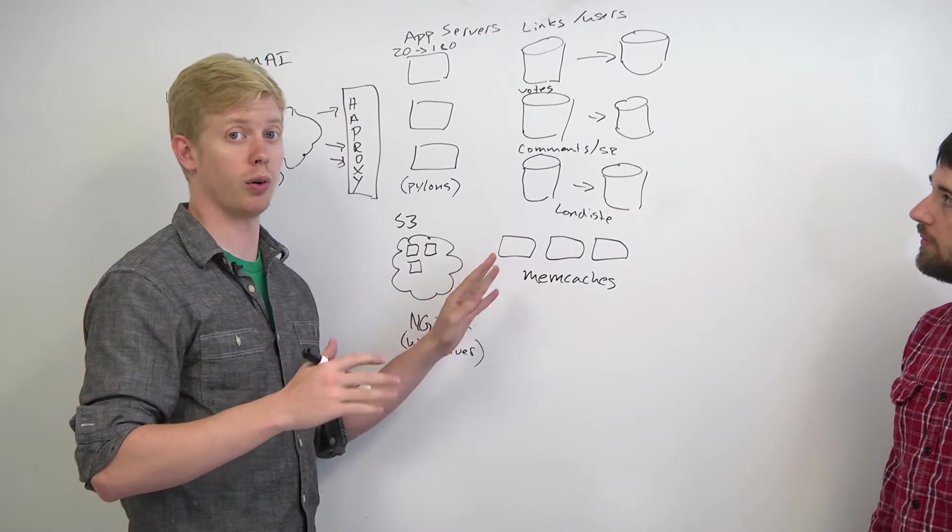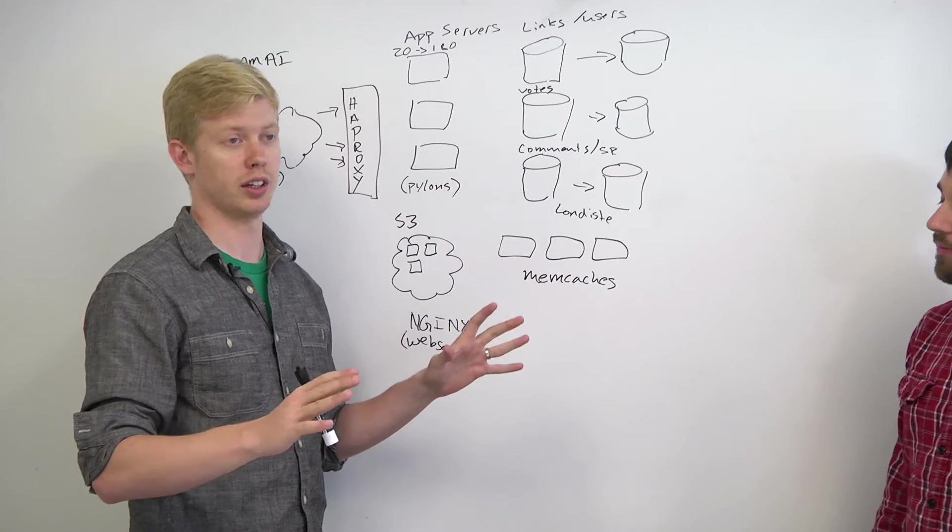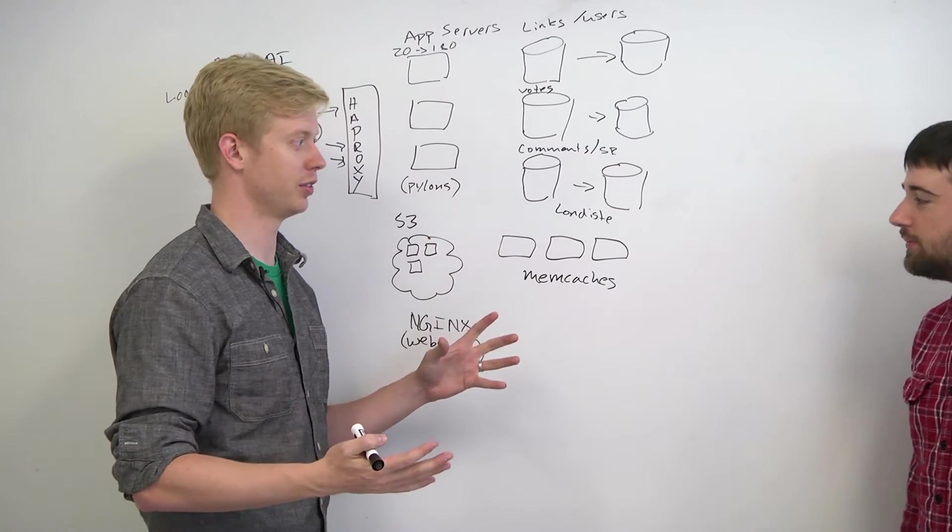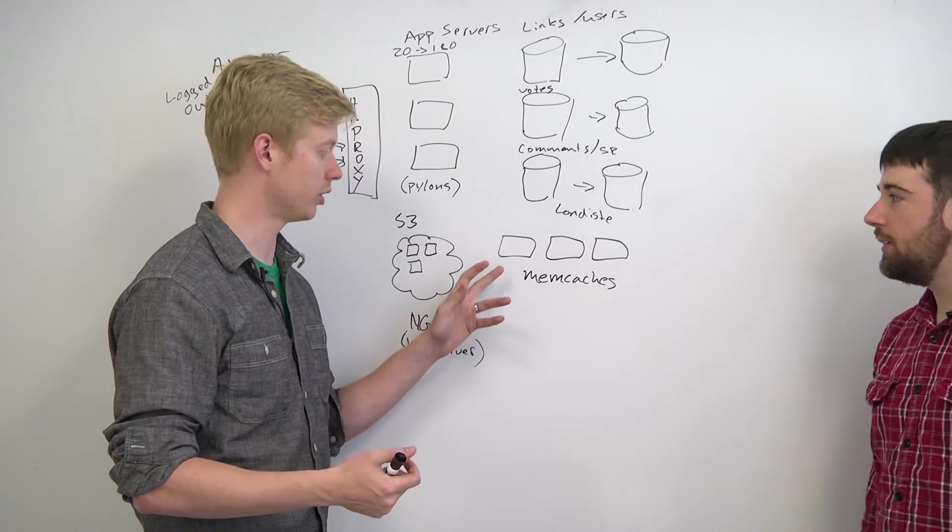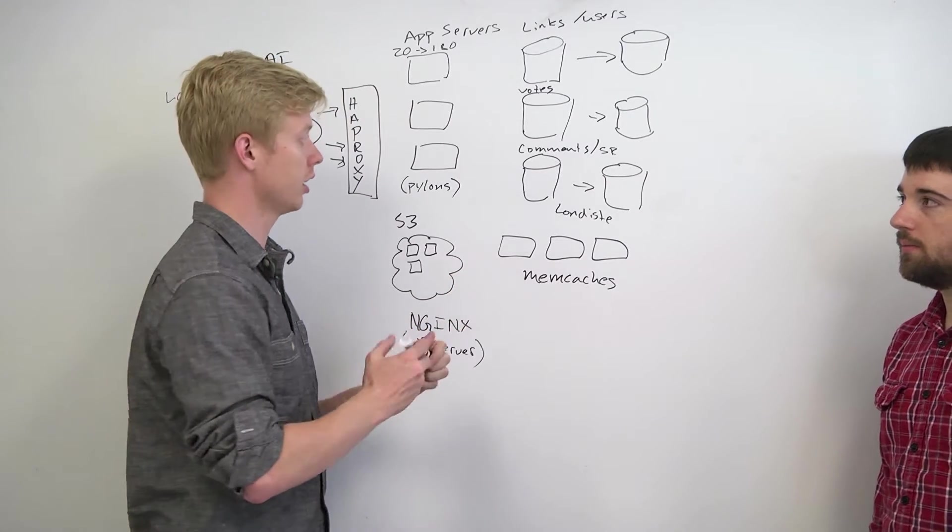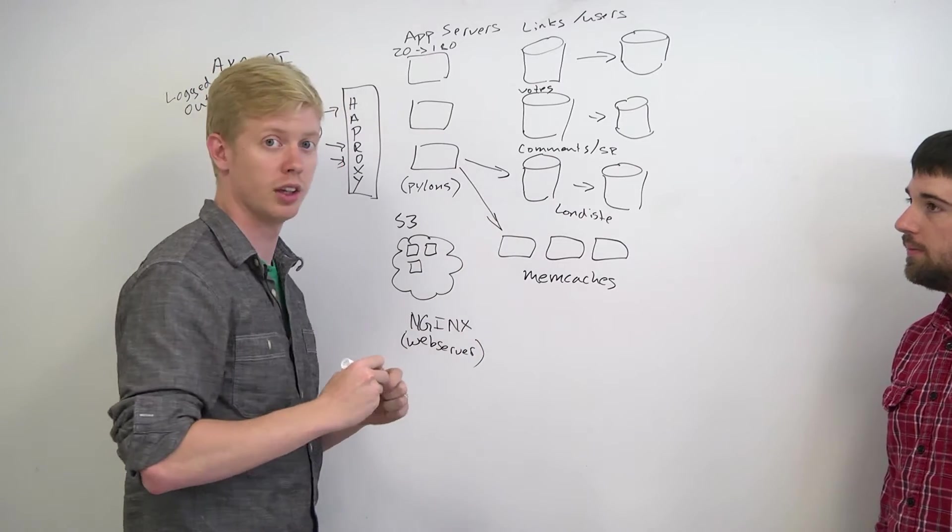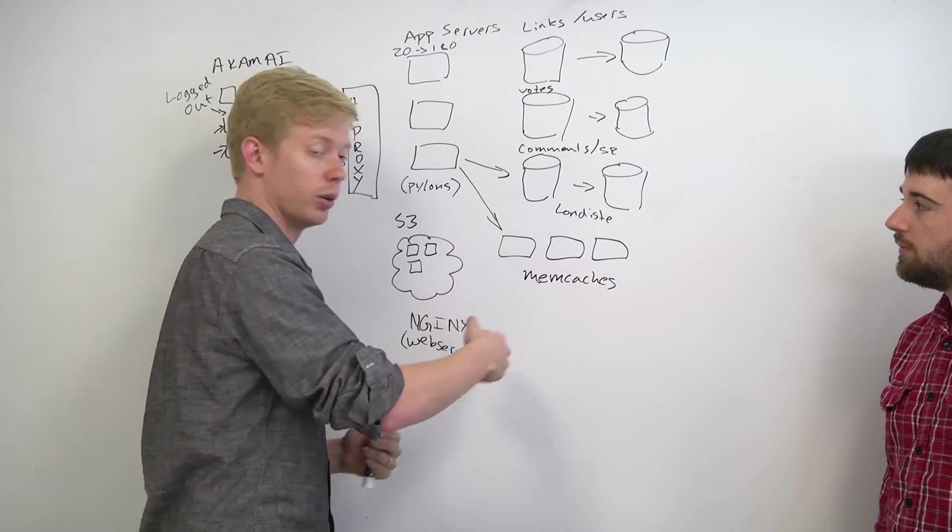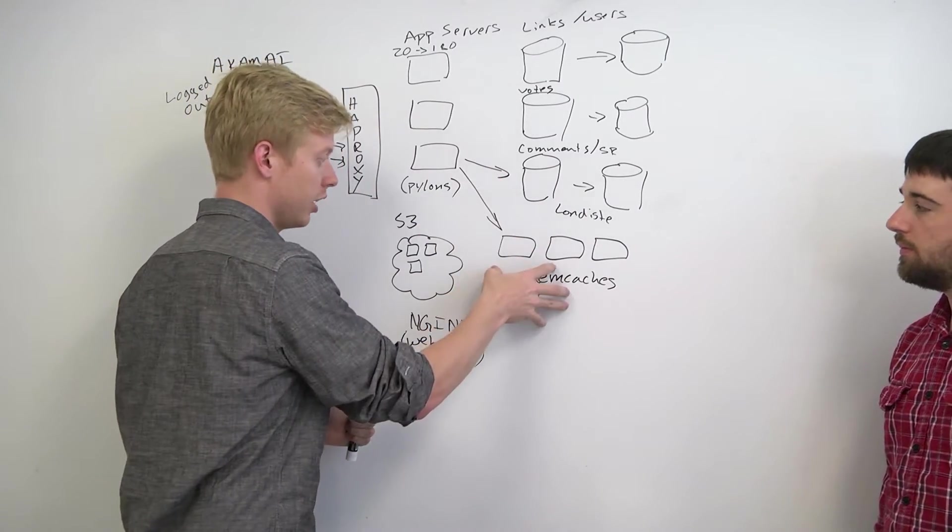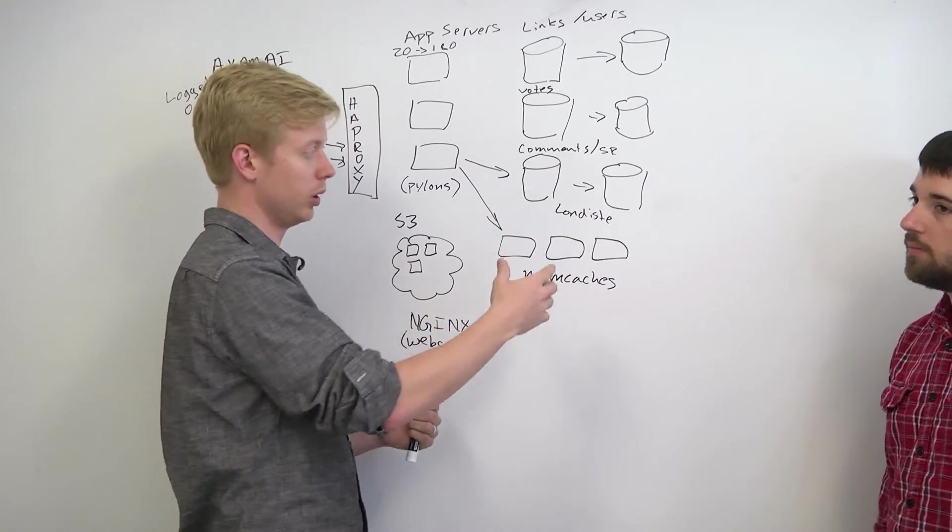We used memcached at Reddit for everything. It's like the Swiss Army knife of systems. I think we used it definitely to avoid replication lag. We'd write to the database and memcached at the same time, so that when you do an immediate redirect to a permalink page or something like that, the data is good to go if your read would have otherwise hit the slate.